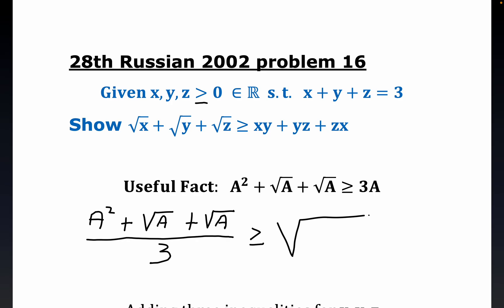So we're going to have the cubed root of A squared times the square root of A times the square root of A.